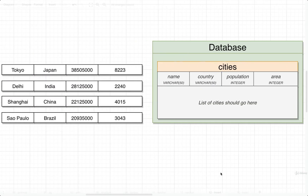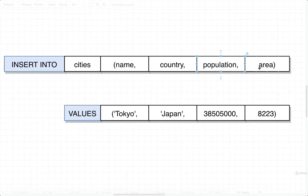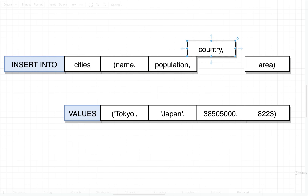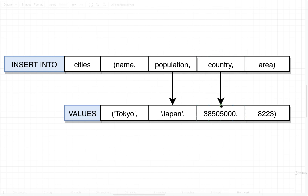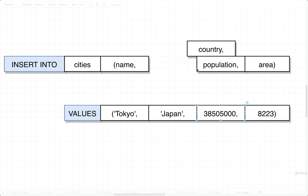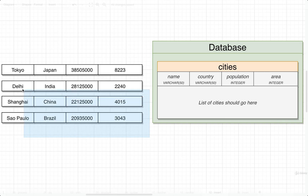First, we listed out all the columns inside the cities table in a very distinct order: name, country, population, area. If we wanted to, we could arbitrarily jumble the order of columns. The only requirement is that when we list out all the values we want to insert, they match up in the same order as the columns listed. For example, if we swapped country with population, that would mean inserting the string 'Japan' under the population column and '38 million' under country - which is definitely not what we want. So we just need to make sure the values always match the column order.